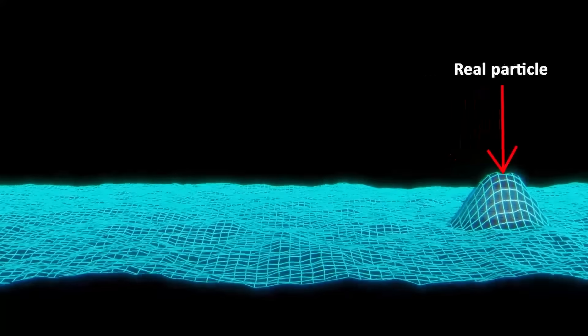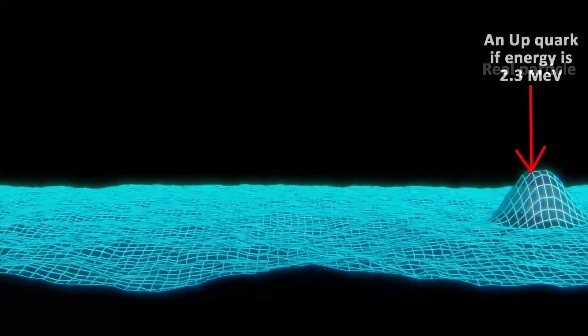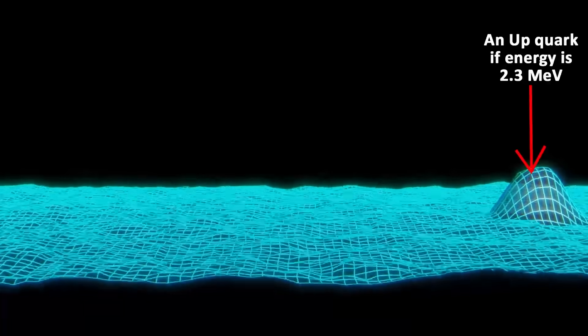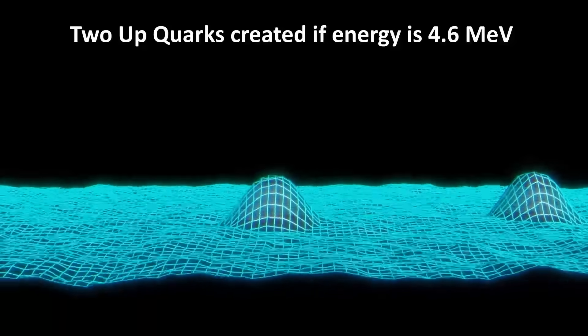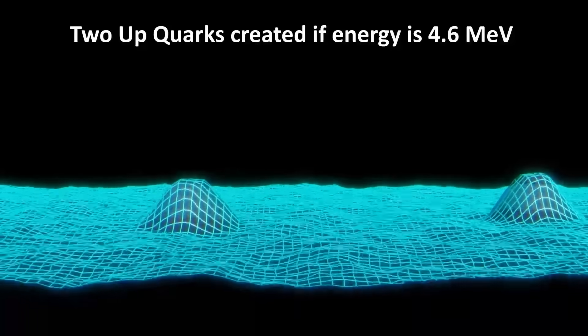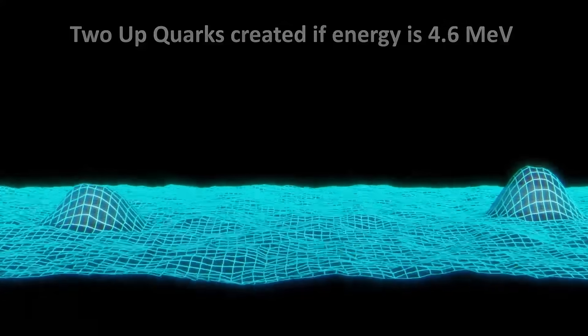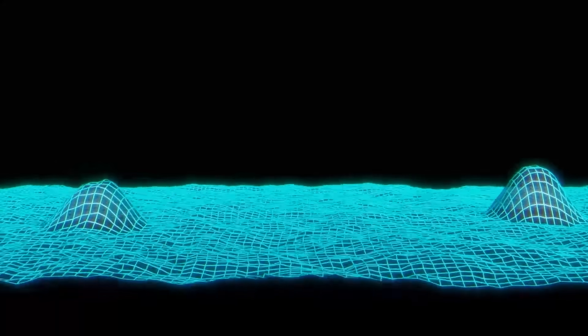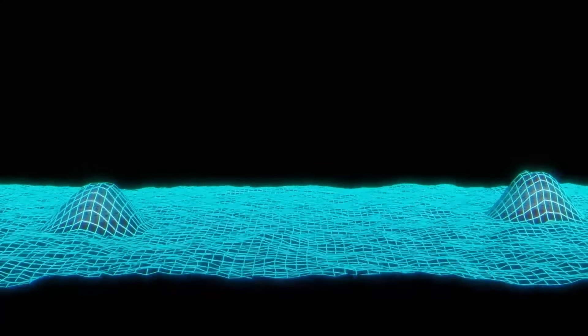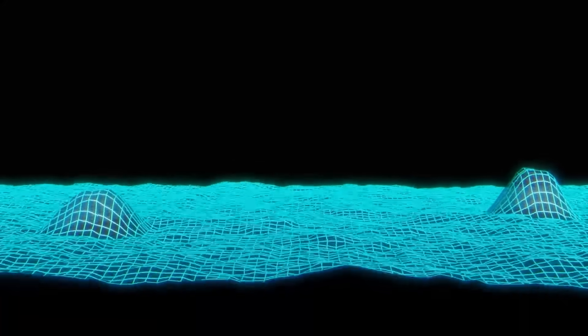So in the upquark field, for example, an upquark will be created if there's energy of 2.3 mega electron volts, or MeV, which is the mass of one upquark. Two quarks will be created if there's energy of 4.6 MeV. So a particle is nothing more than an excitation in this field. These excitations are quantized, not continuous. So the fields can only create particles in integer increments. They cannot, for example, have 1.5 upquarks, only 2 quarks, or 3 quarks, etc.